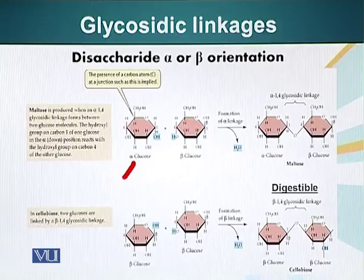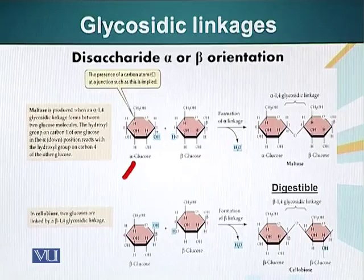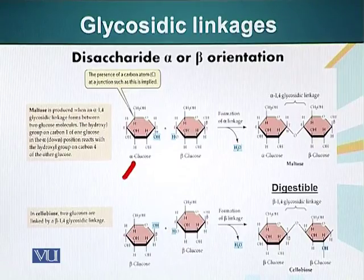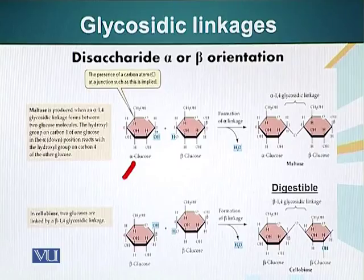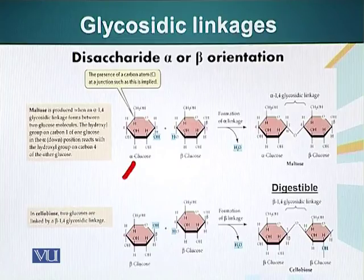We have already looked at the structure of alpha and beta and how they are different. In alpha glucose, the hydroxyl group is pointing downwards. In beta glucose, the hydroxyl group is pointing upwards. When this bond is formed between alpha and beta glucose, a water molecule is removed — a condensation reaction, which we have talked about in our previous module.